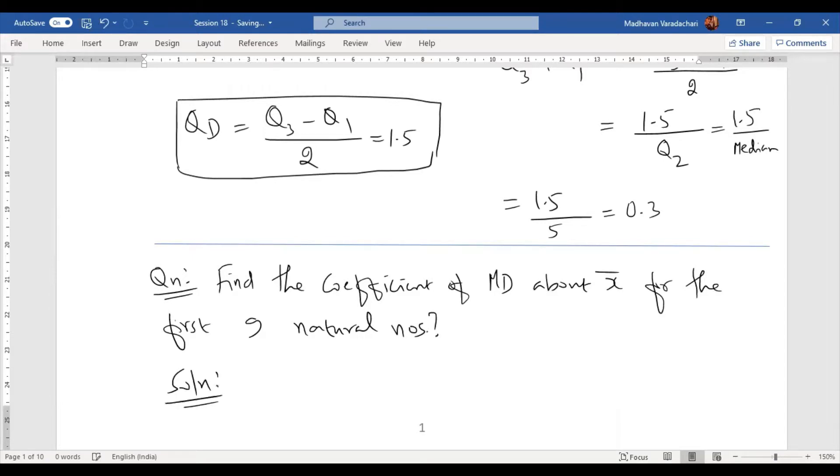First of all, what are the nine natural numbers? It is 1, 2, up to 9. So the data, that means these are our x values: x can be 1, 2, 3, up to 9.